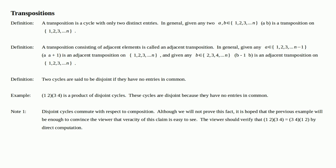Note that disjoint cycles commute with respect to composition. Although we will not prove this fact, it is hoped that the previous example will be enough to convince the viewer that veracity of this claim is easy to see. The viewer should verify that the product of cycles (1 2)(3 4) is equal to the product of cycles (3 4)(1 2) by direct computation.